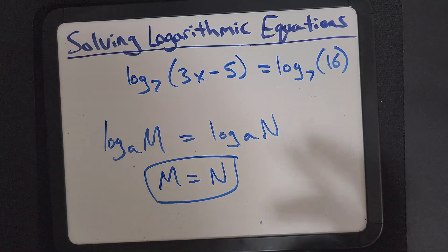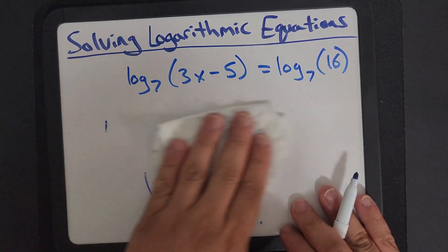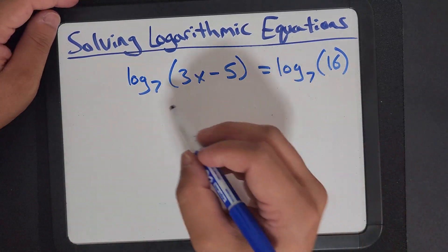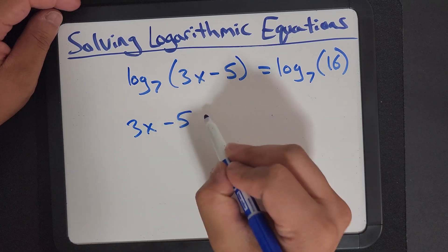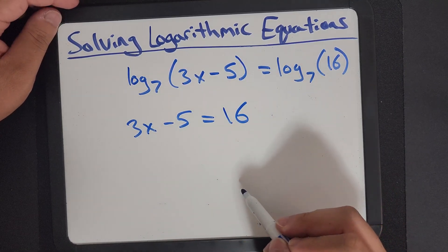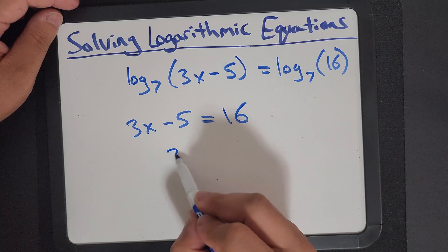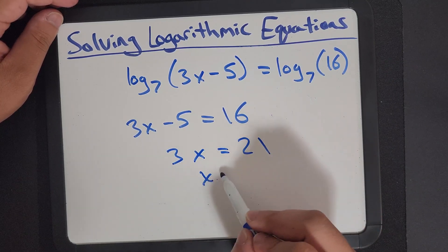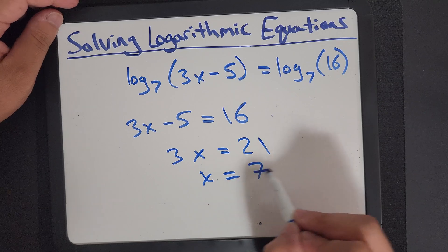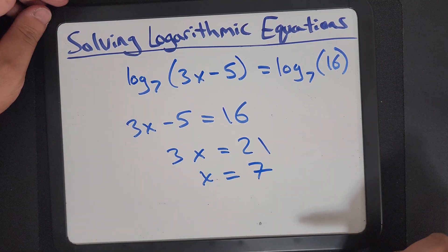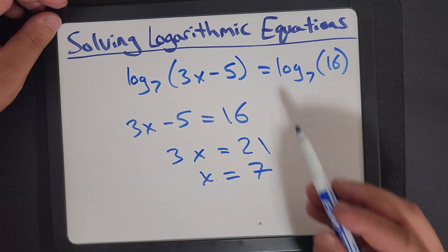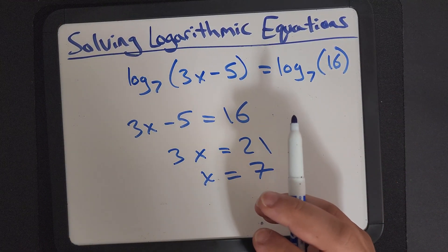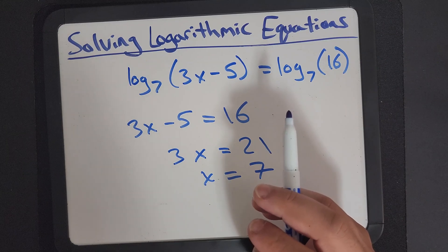That always holds true in math. So in this case, same log base, so we can write 3x minus 5 is equal to 16. And then this is just simple algebra. I know that looks scary, but once you apply rules, then you have a cheat code.